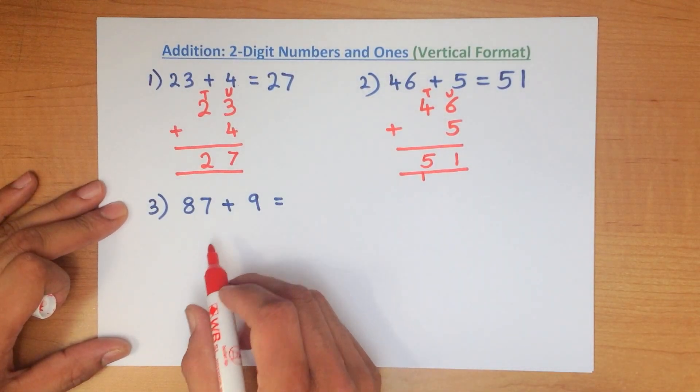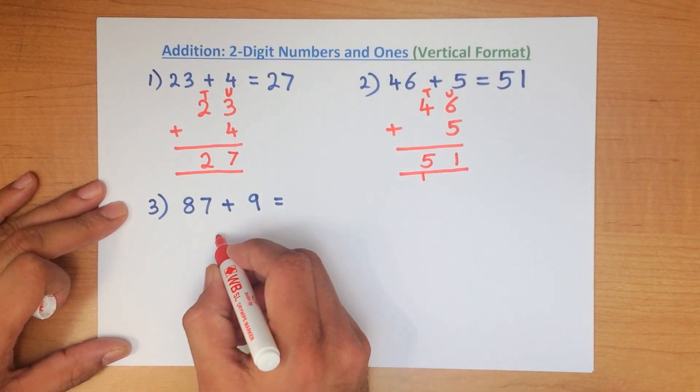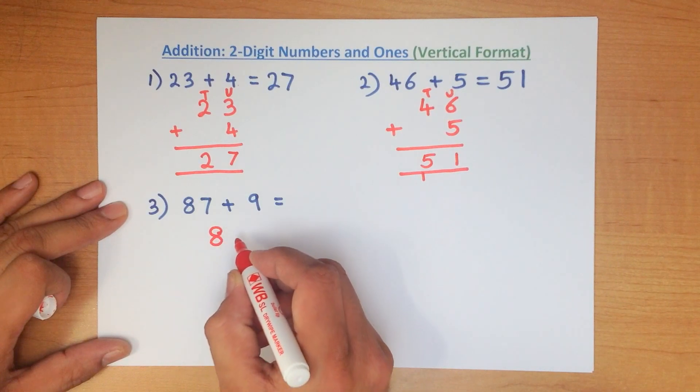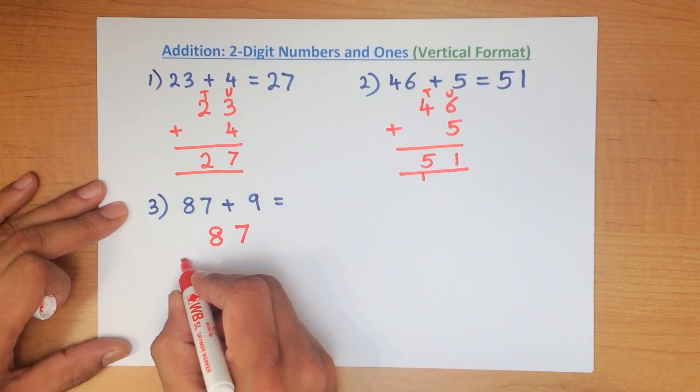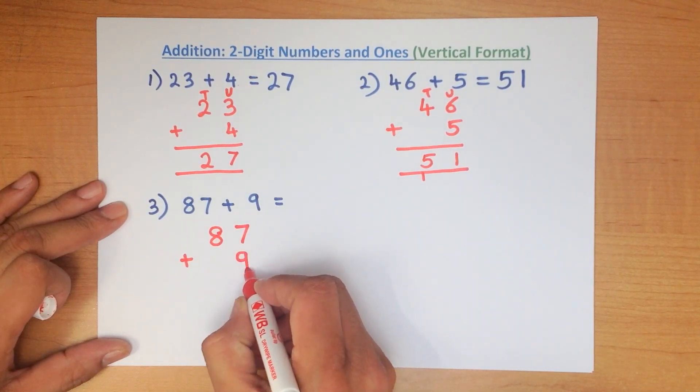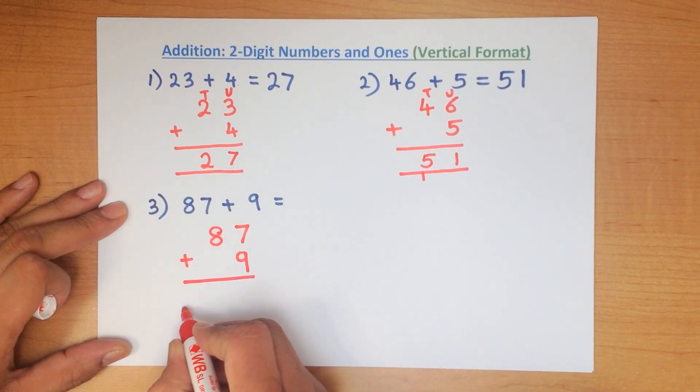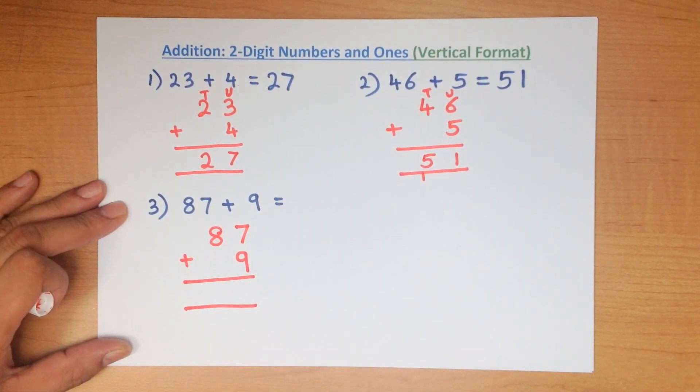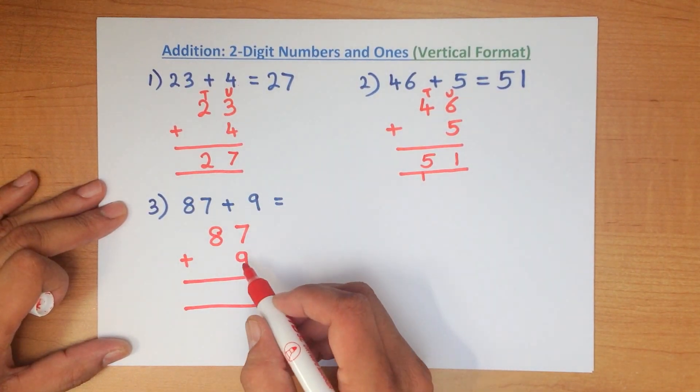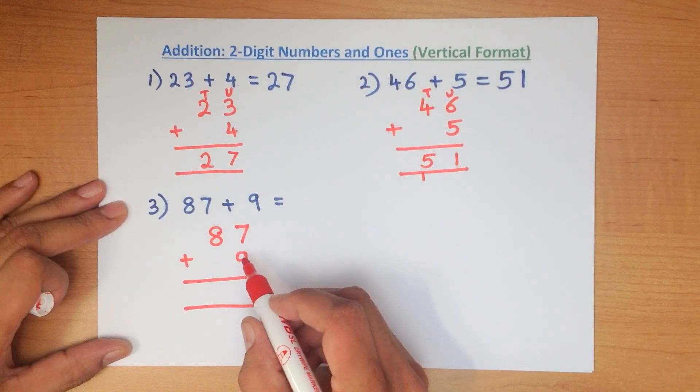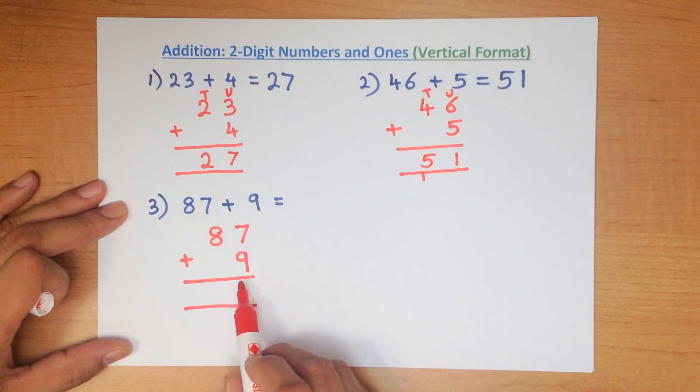Again, the first thing we do is we write the numbers down in the vertical format. 87 plus 9. We start as we always do by adding the column on the right hand side first.